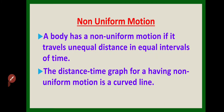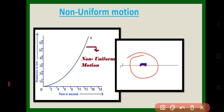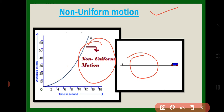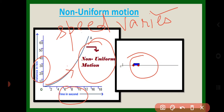Let us understand non-uniform motion through an animation. As you can see, the object increases its speed — this is non-uniform motion. The speed is not constant; it varies. The distance-time graph for non-uniform motion is a curved line, whereas in uniform motion it was a straight line.